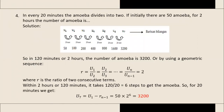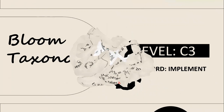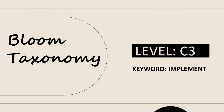Problem 4. Every 20 minutes, an amoeba divides into two. If initially there are 50 amoeba, after two hours the number of amoeba is? By using a geometric sequence where r is the ratio of two consecutive terms, within two hours it takes 6 steps to find the number of amoeba. Based on Bloom's taxonomy, this question is on level C4 with the keyword 'implement'.